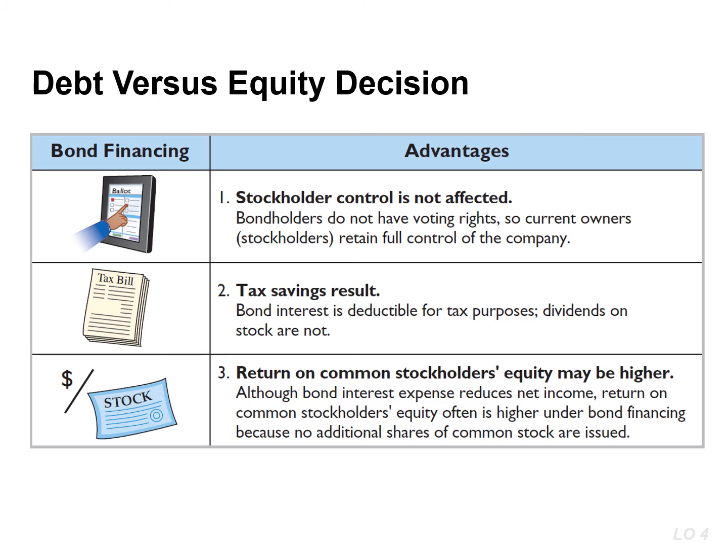When obtaining long-term capital, managers must decide whether to issue bonds or to sell common stock. Bonds have three primary advantages relative to common stock, as shown in this slide. But keep in mind, debt is risky for a company because interest payments must be made even if the company has not earned sufficient income to pay them. Dividends, however, are always at the company's discretion and are not legally enforceable until they are declared by the board of directors. As a result, debt is considered riskier than equity.